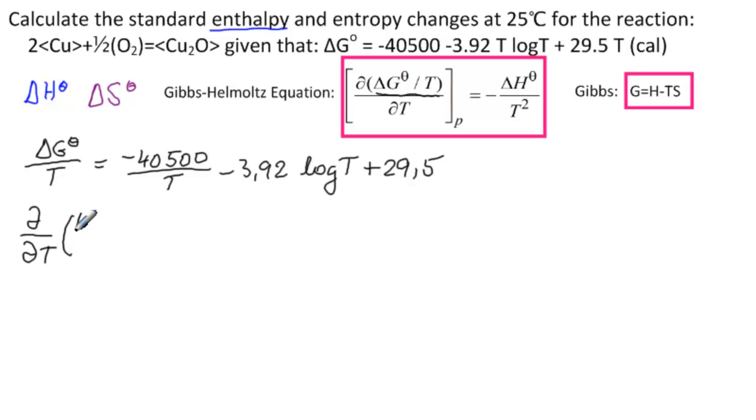So delta G theta over T, the derivative of minus 1 over T is plus 1 over T squared. So 40,500 over T squared. The derivative of log of T is 1 over T times 1 over LN of 10. Mind you, this is a base of 10, so the derivative of log base 10 of T is 1 over T times 1 over LN of 10. And the derivative of this is 0.